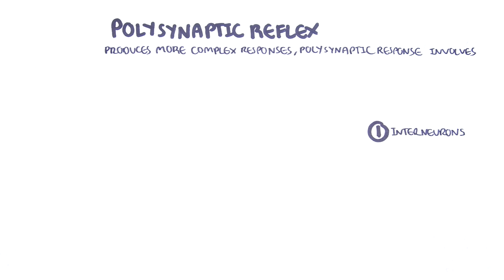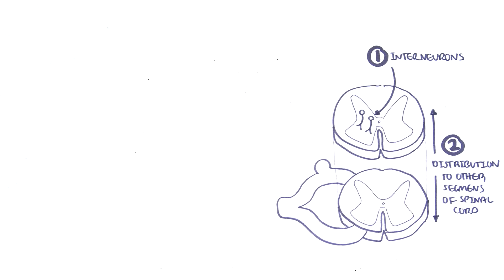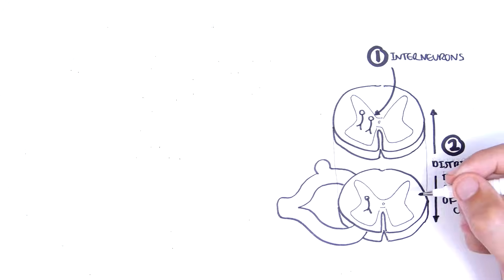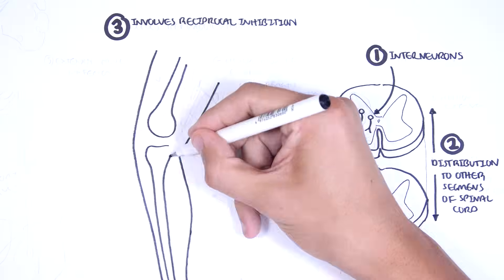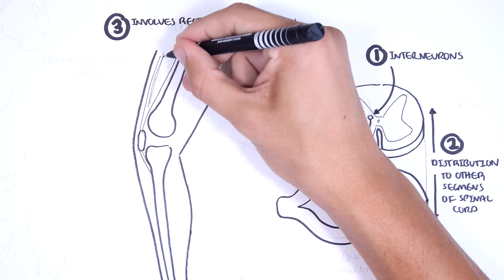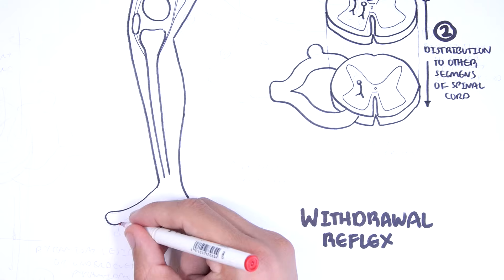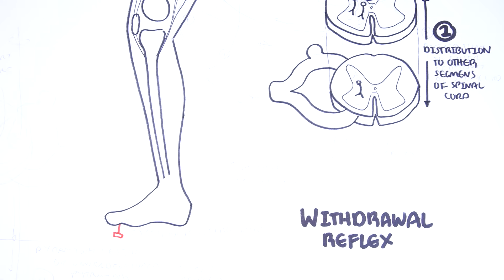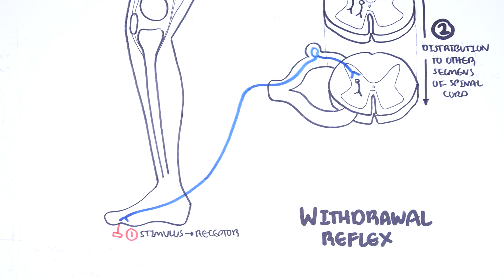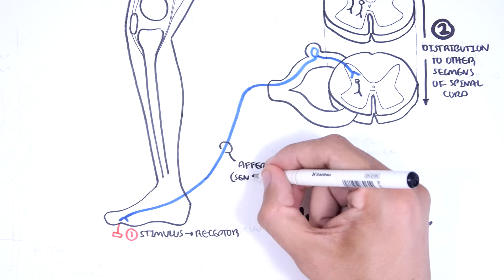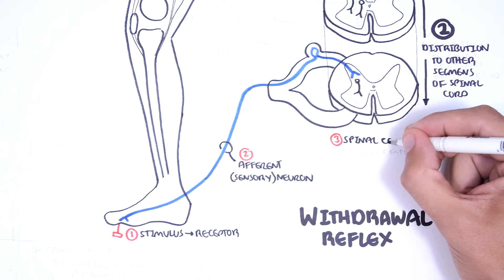All polysynaptic reflexes involve interneurons, intersegmental distribution along different areas of the central nervous system, and reciprocal inhibition. The withdrawal reflex is a polysynaptic reflex that is initiated by nociceptive stimuli. It can serve as a protective mechanism to prevent further injury. The first part of the reflex pathway is the stimulation of receptors in the area, in this case due to a painful stimulus to the foot. The receptors will activate the afferent neurons, which are your sensory neurons, which will bring this information to a specific spinal cord level, the processing center in the spinal cord.